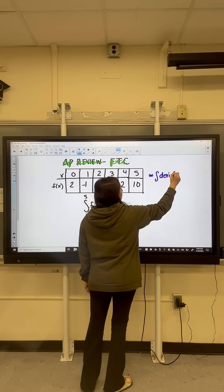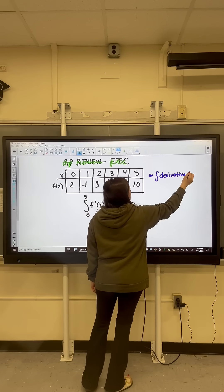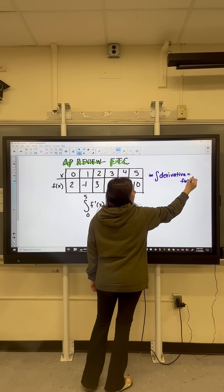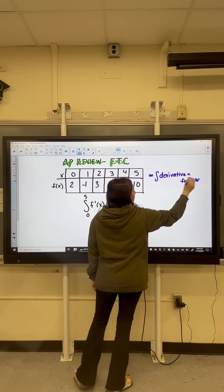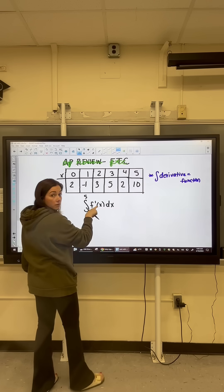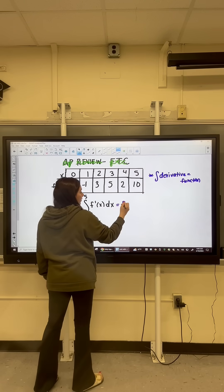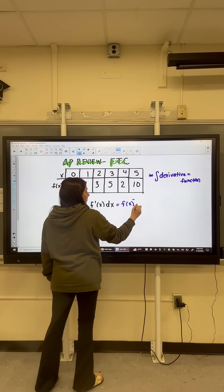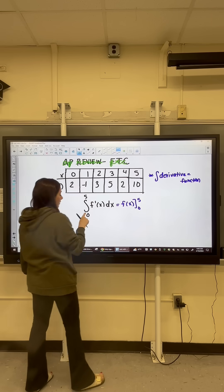So a few things here. When we integrate the derivative, we get back to the function. So let's just remember that. When we integrate f prime, that means we're going to get back to the function. But it's definite integral, so there's no plus c. So we're going to be integrating from 0 to 5.